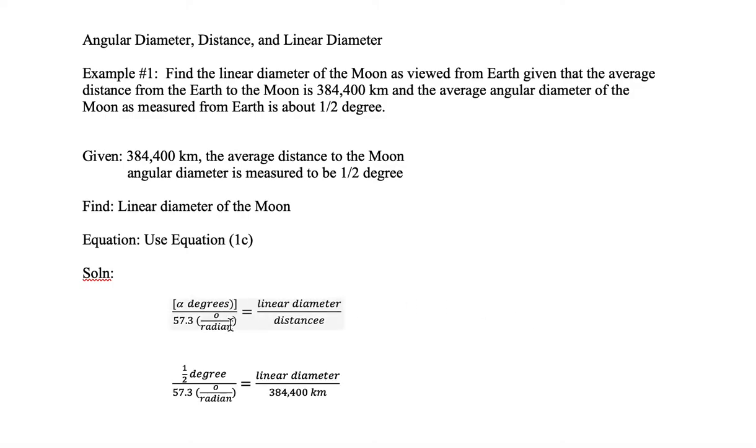On the left side of the equation we substitute the numerator as half a degree and leave the denominator as 57.3 degrees per radian. On the right hand side we are solving for linear diameter so we substitute in the distance of 384,400 kilometers.